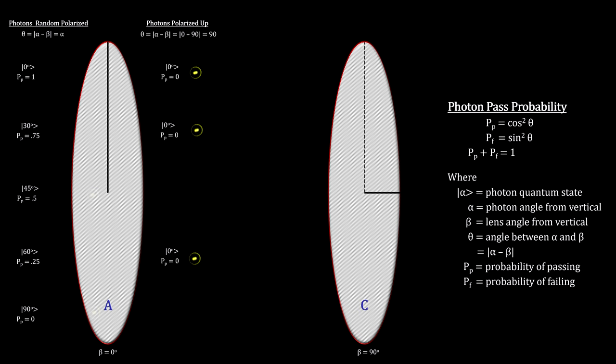With this polarization, the probability of passing through lens C, which is rotated 90 degrees from the vertical, is zero. No light gets through C.